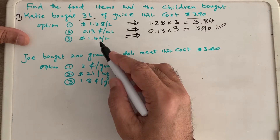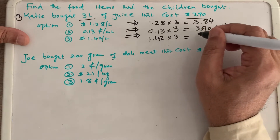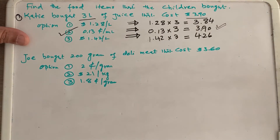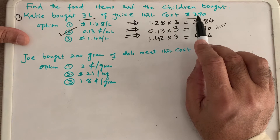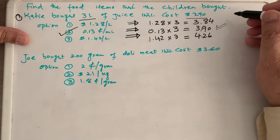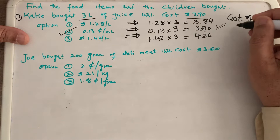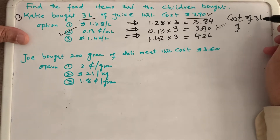But we also check the last option, which is $1.42 per liter. Times 3 liters, that gives $4.26. So Option 2 is correct. In this word problem, we decided to calculate the cost of 3 liters of juice and figure out whichever gives $3.90 is the correct option. The cost of 3 liters of juice matches Option 2.